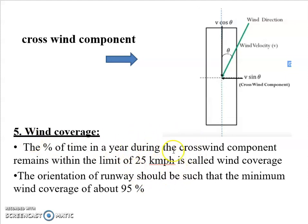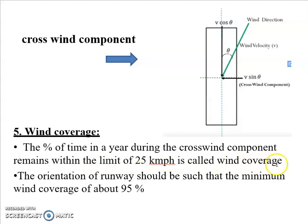The time in the year during which the crosswind component remains within the limit of 25 kmph is called wind coverage or pin coverage. The orientation of the runway should be such that a minimum wind coverage of about 95% is obtained.